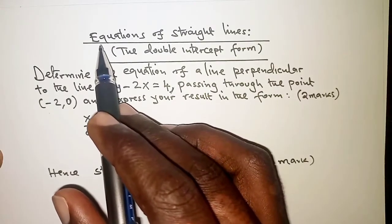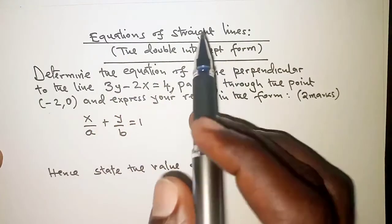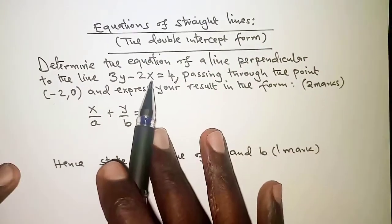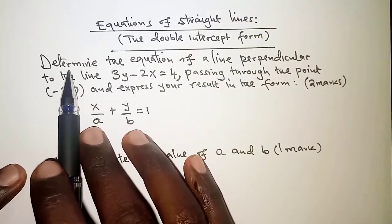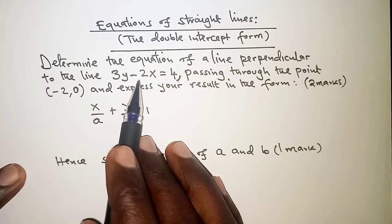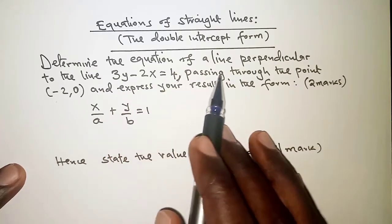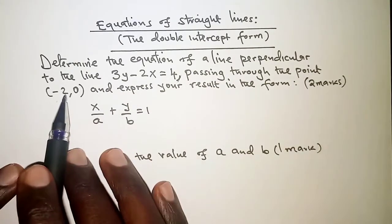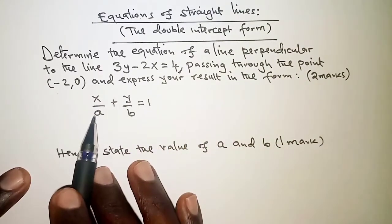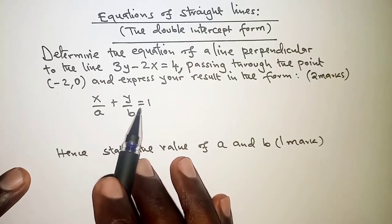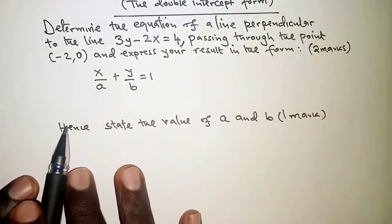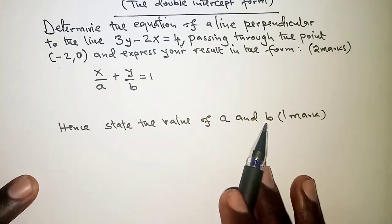Today we are going to look at equations of straight lines, particularly the double intercept form. The equation reads: determine the equation of a line perpendicular to the line 3y minus 2x equals 4, passing through the point negative 2, 0, and express your result in the form x over a plus y over b equals 1. That is the double intercept form. Hence state the value of a and b.